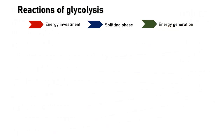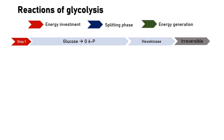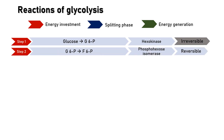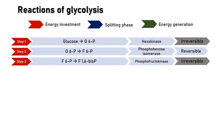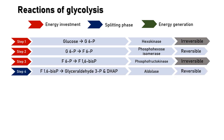Here I am presenting a simple illustration of all the reactions of glycolysis. Red color is for the energy investment phase, blue color for the splitting phase, and green for the energy generation phase. The very first reaction in glycolysis is glucose to glucose-6-phosphate, carried out by hexokinase, and this reaction is irreversible. Step 2 is glucose-6-phosphate to fructose-6-phosphate, carried out by phosphohexose isomerase. Then fructose-6-phosphate to fructose-1,6-bisphosphate is carried out by phosphofructokinase, which is again irreversible. The fourth step converts fructose-1,6-bisphosphate to glyceraldehyde-3-phosphate and dihydroxyacetone phosphate; the enzyme is aldolase.